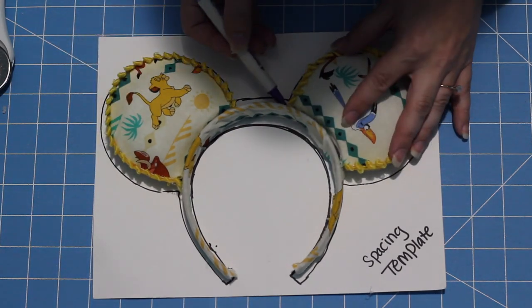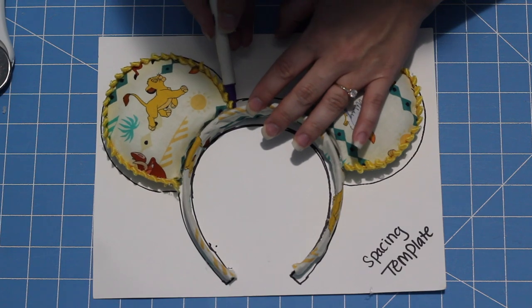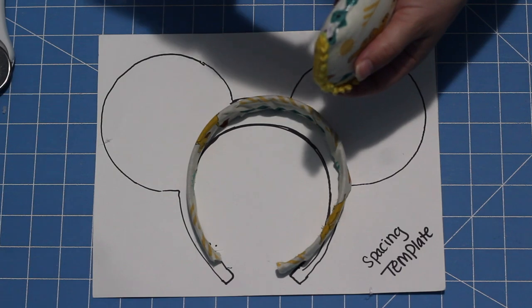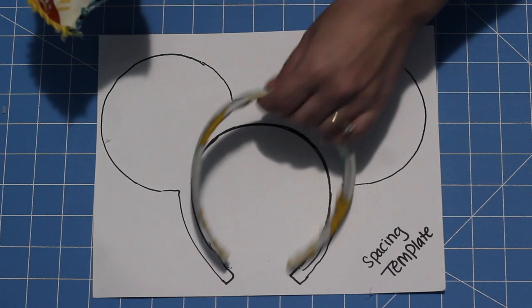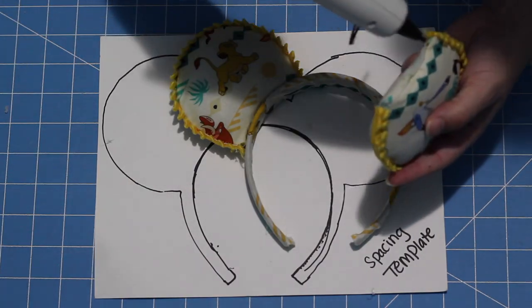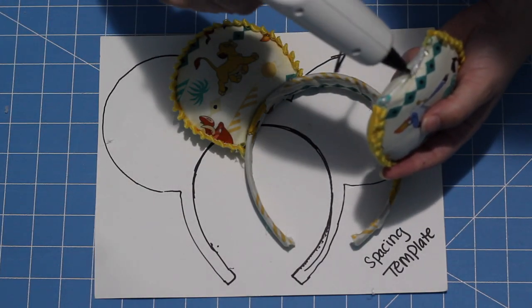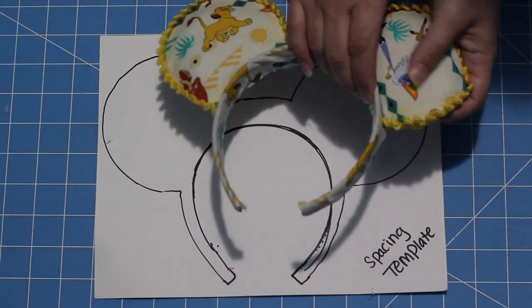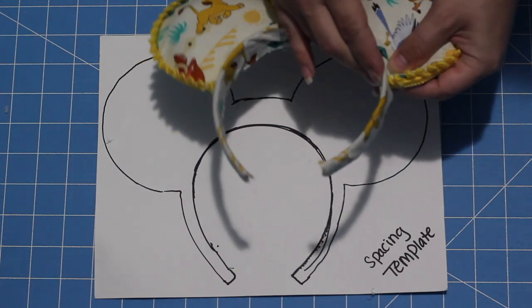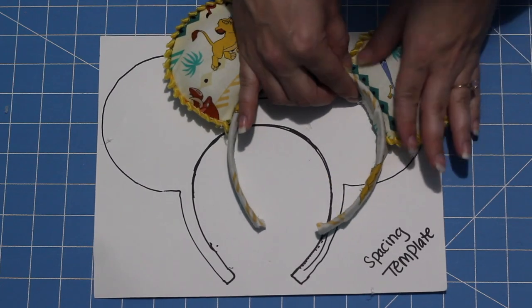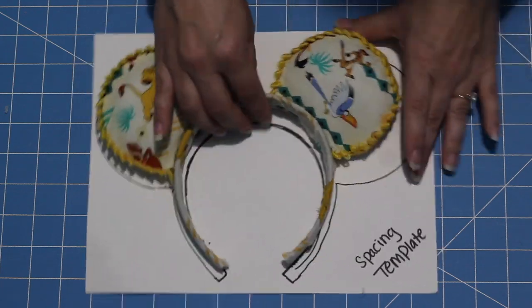With the headband all done and the ears all done, you're going to take the spacing template that I have linked in the description box below. This just helps you get the right spacing between your ears. You're going to take that invisible ink marker and go ahead and mark where each ear goes. Then I apply a little bit of hot glue to the bottom of the ear and firmly press it down on the headband, making sure to line it up with that dot.